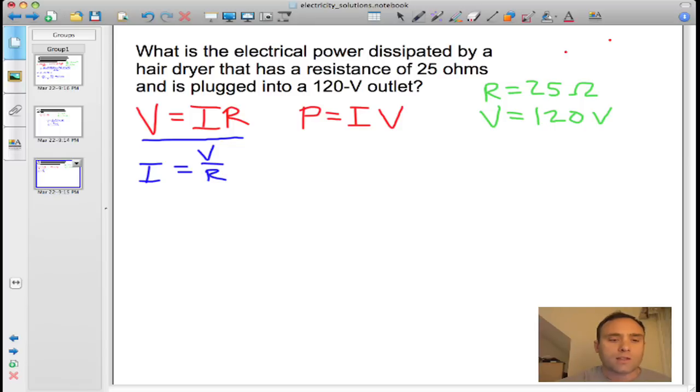When we make that substitution, I is equal to the voltage, which is 120 volts, divided by the resistance, which is 25 Ohms. When you make that calculation, you get a current that is equal to 4.8 amps.